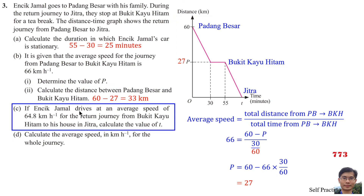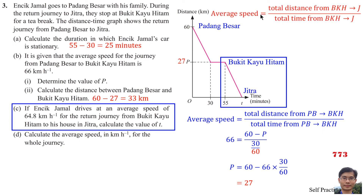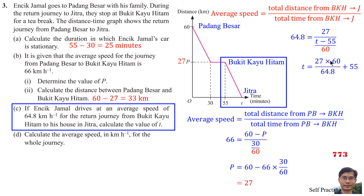Question 4 of this section: If Injit Jamal drives at an average speed of 64.8 km per hour for the return journey from Bukit Gaiohitam to Jitra, calculate the value of T. Average speed equals distance from Bukit Gaiohitam to Jitra divided by time from Bukit Gaiohitam to Jitra. Average speed is 64.8 km/h, distance is 27 km, and time is T minus 55 divided by 60. Solving gives T equals 80.